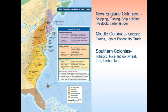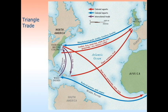To sum it up, the economies of the colonies pretty much break down like this: New England focused on shipping, fishing, shipbuilding, trade, lumber, and basic manufacturing. The middle colonies focused on shipping, foodstuffs, trade, and grains. The southern colonies focused on cash crops — tobacco, rice, indigo — plus some wheat, lumber, and furs. That is the general breakdown of the economy of the American colonies.